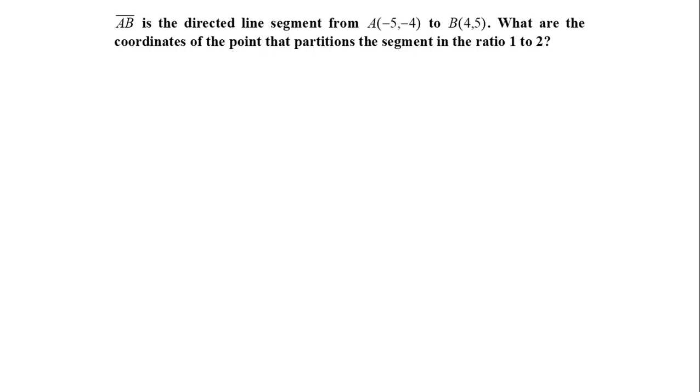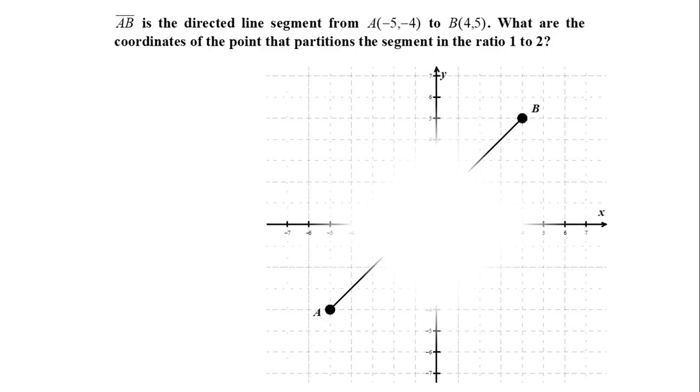Okay folks, so we are going to partition this line segment AB into a ratio 1 to 2. The coordinates of point A are negative 5, negative 4. The coordinates of point B are 4, 5. And we are going to approach the problem graphically. So we're going to plot the points and connect the points.